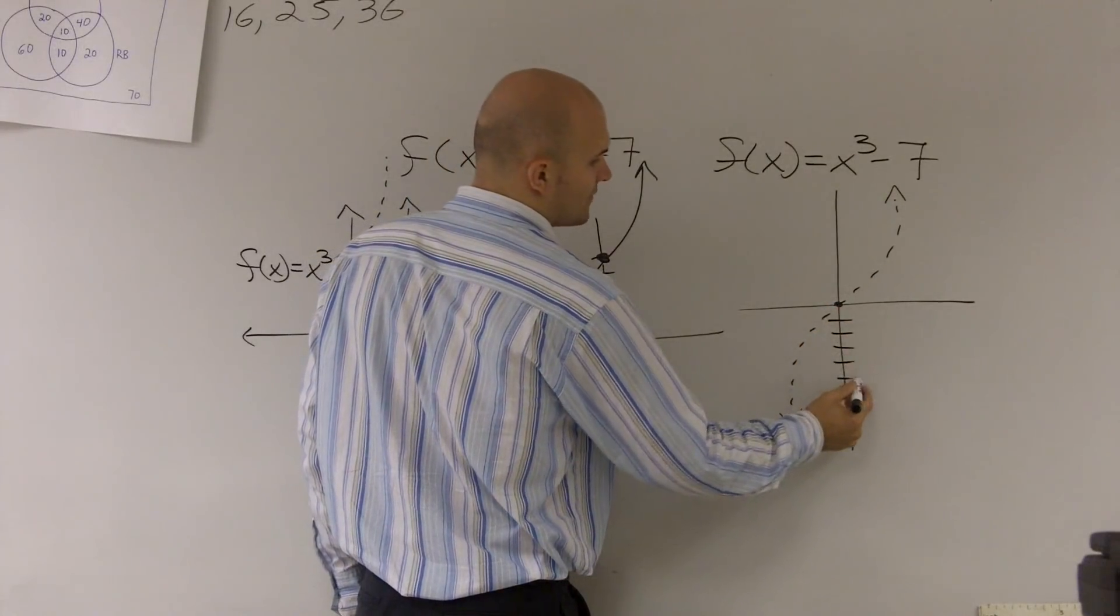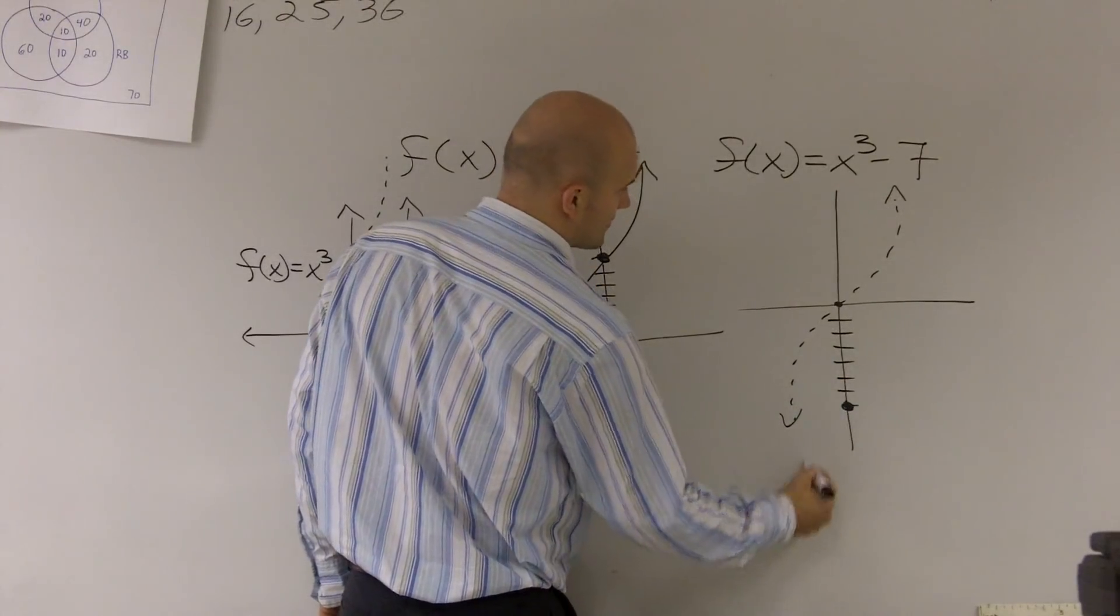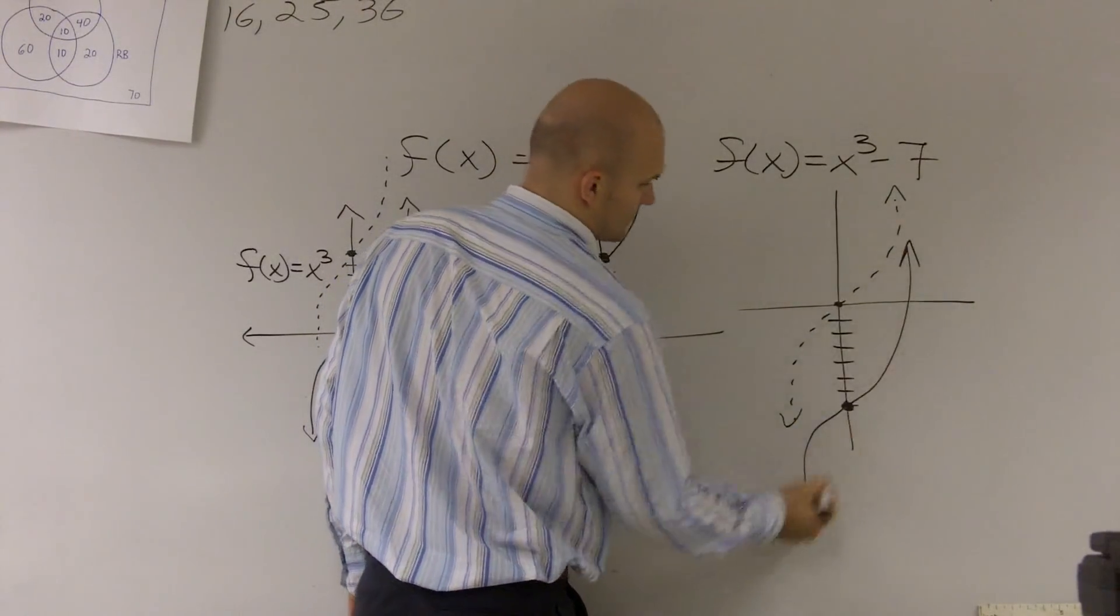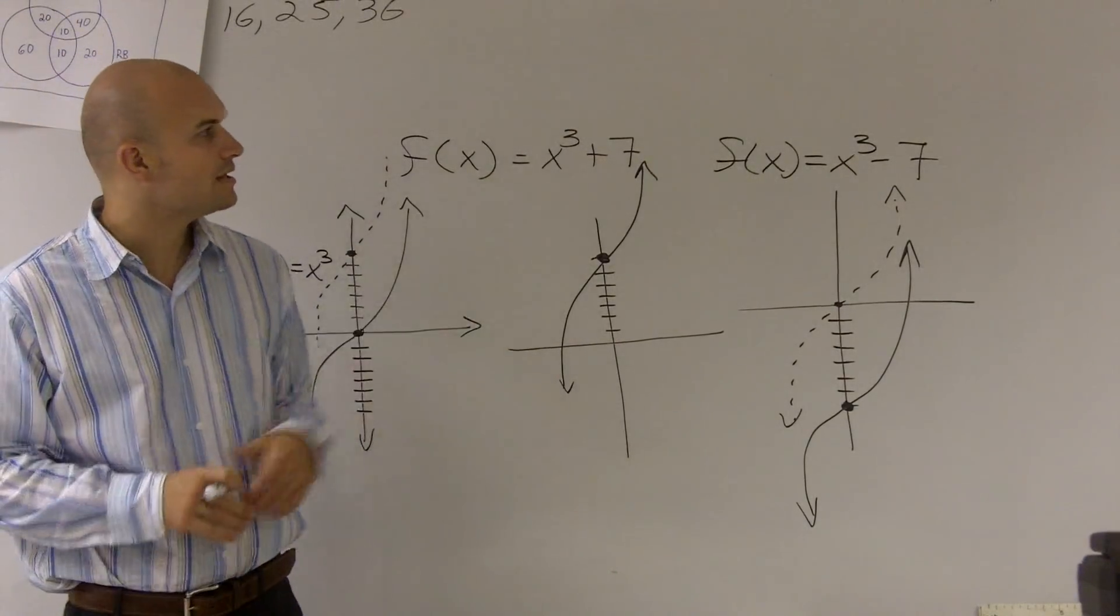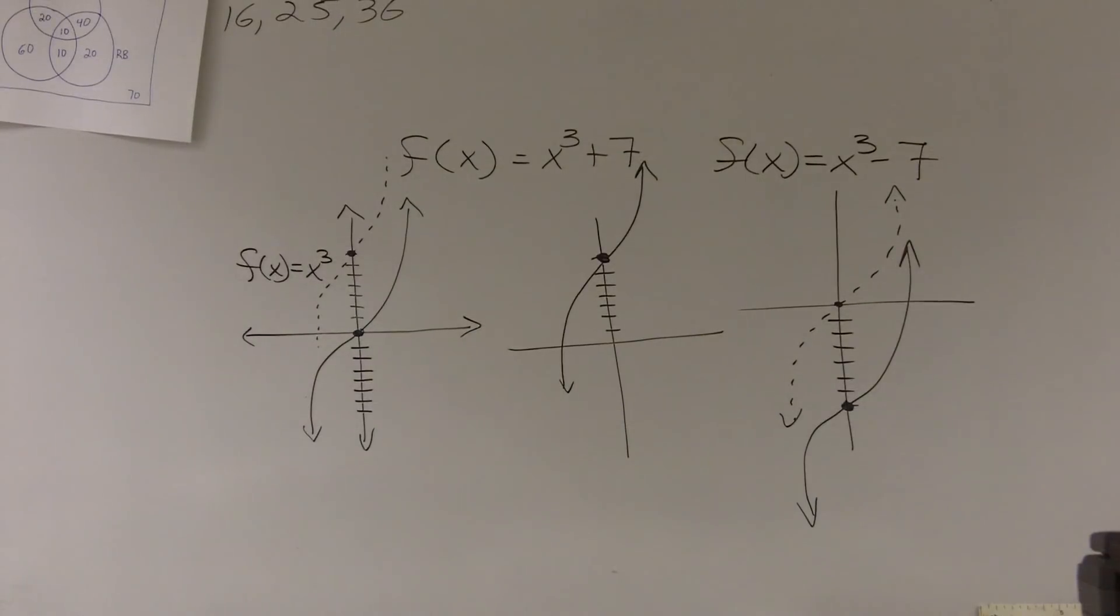1, 2, 3, 4, 5, 6, 7. So that is your vertical transformations for a function.